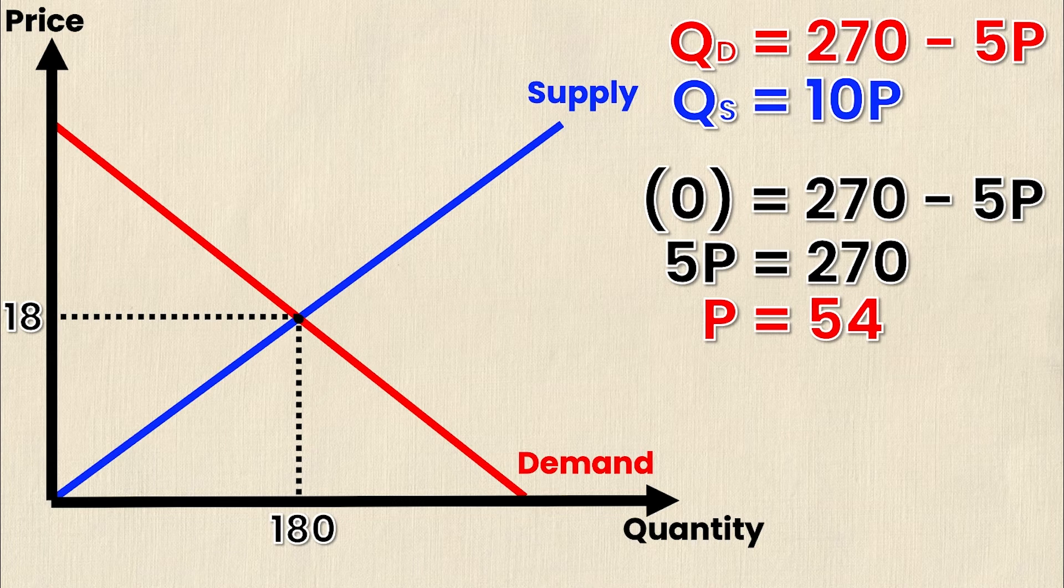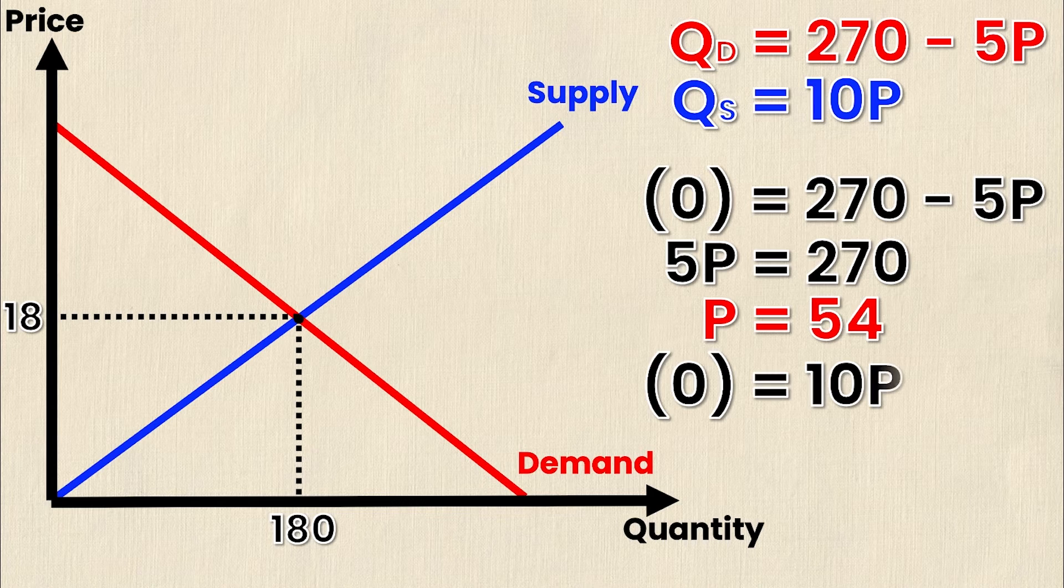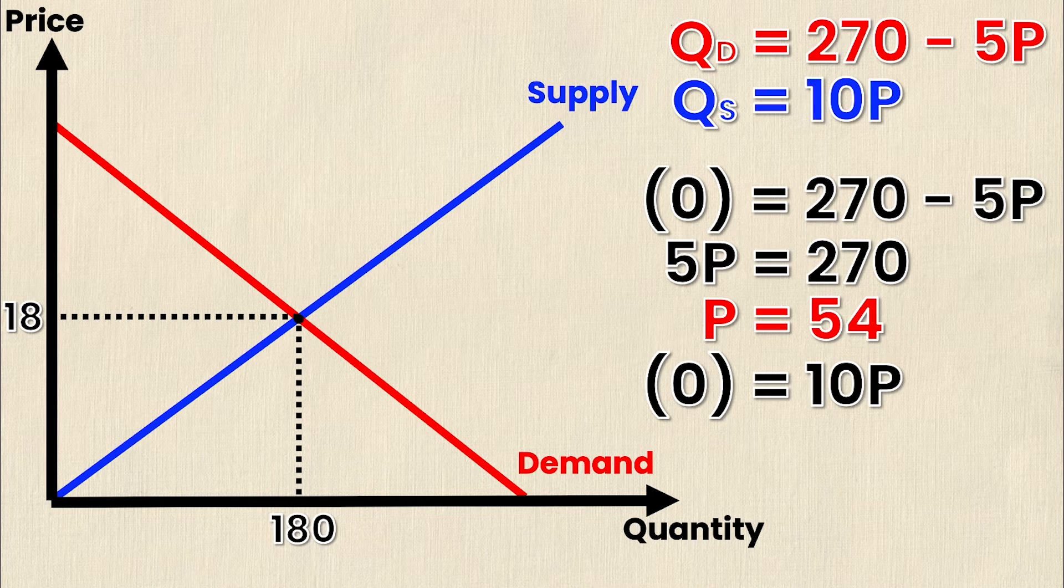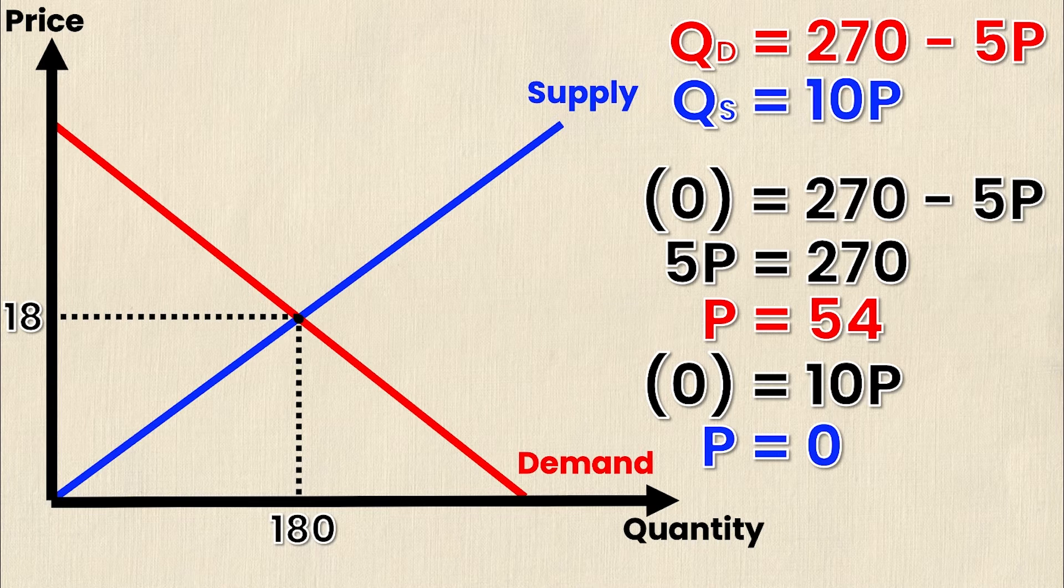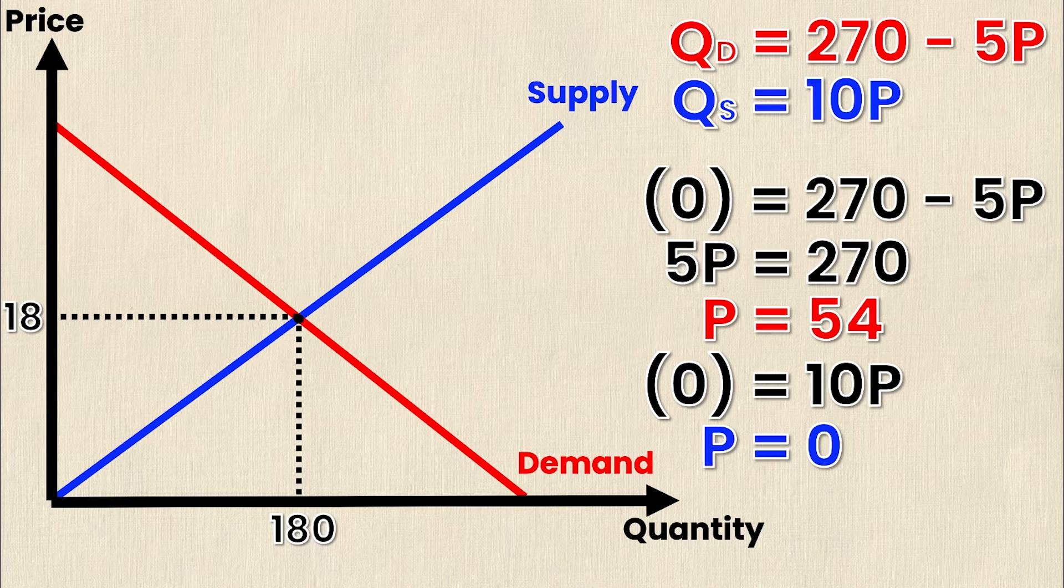Doing the same thing for the supply equation I get zero is equal to 10P. Well this one's even easier. P must be equal to zero as well. Now that I have my P intercepts for the supply and demand curves I can now label those on the graph as well.